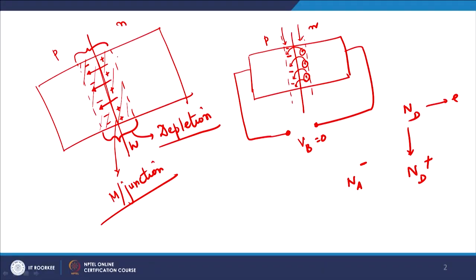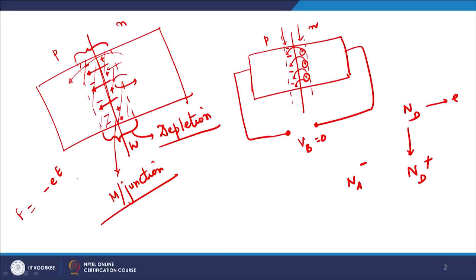For an electron to move from N-type to P-type material, it has to cross the depletion region. But as it enters the depletion region, it sees an electric field directed from N to P. Because the electron is a negative charge, the force is −eE, so the electron trying to enter is pushed back. Beyond a certain point, when the electric field becomes large enough, any extra electron coming from the N side is pushed back by the electric field within the depletion region.